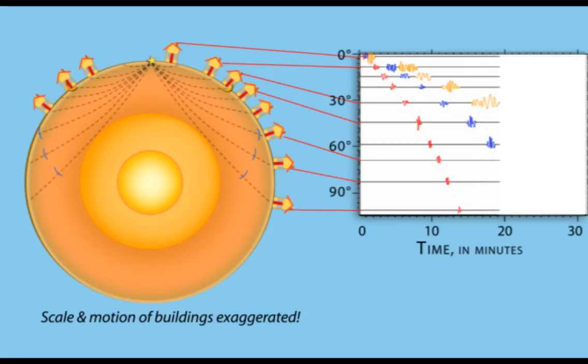Seismic waves travel at different rates, so the farther a seismic station is from an earthquake, the farther apart the P, S, and surface wave arrival times will be.